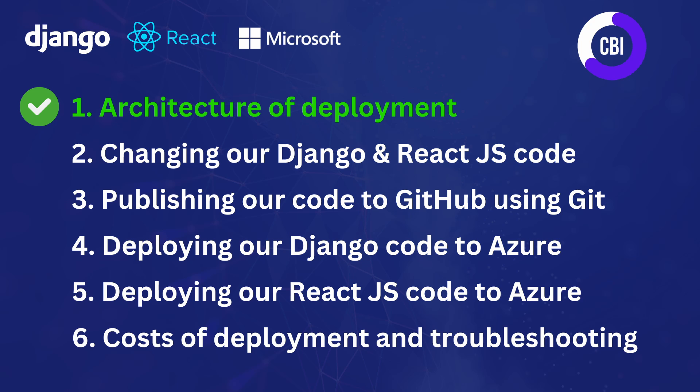Other than that, during this deployment you will not make any costs, and that is already it for this video today. A lot more information will follow when we actually go through the deployment, and I will also try to provide you with as much information as possible. In our next video we're going to start by making some changes to our local code so that it is ready for deployment, then we're going to publish our code to GitHub using Git, and then deploy our Django and React.js code to Azure. Thank you very much for watching — if you enjoyed it please leave a like and subscribe, and I hope to see you in the next one.